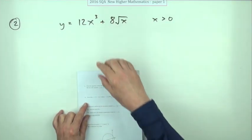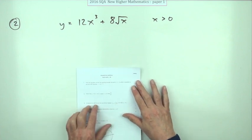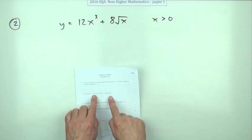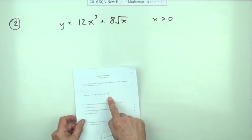Question 2 from the 2016 New Higher Maths Paper 1 — a wee differentiation question.